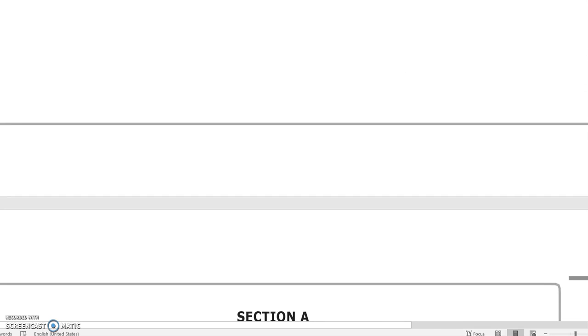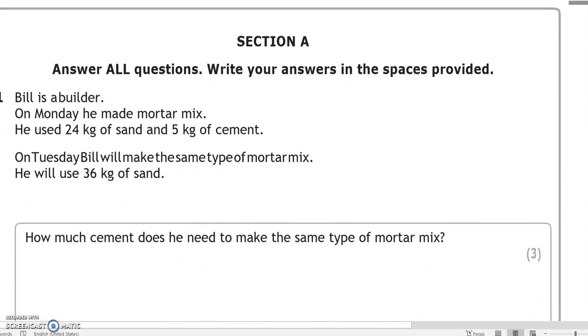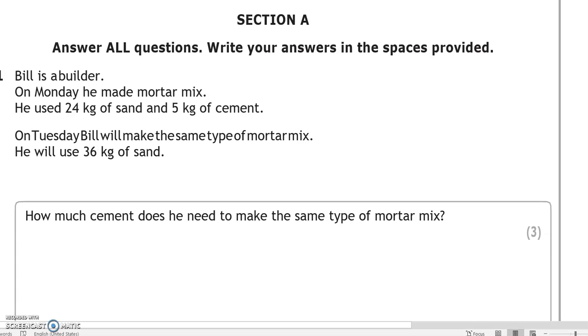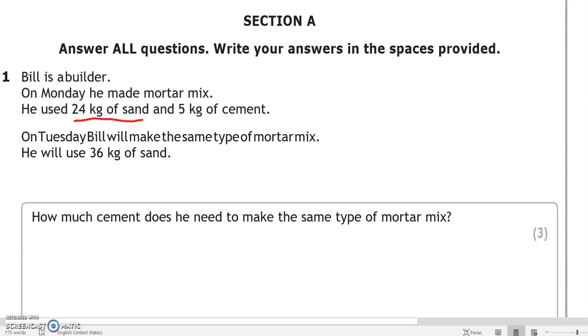So we'll move on to the first question. Bill is a builder. On Monday he made mortar mix. He used 24 kilograms of sand and 5 kilograms of cement. Now this is a key piece of information so we need to stop here and underline it. 24 kilograms of sand and 5 kilograms of cement. S for sand and C for cement. So it's a ratio question as we can see. On Tuesday Bill will make the same type of mortar mix using the same ratio. He will use 36 kilograms of sand.